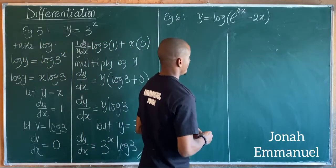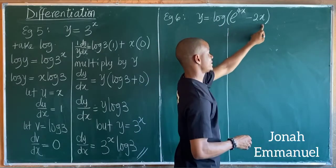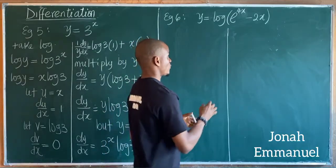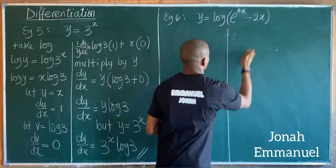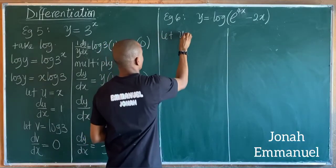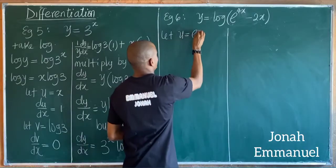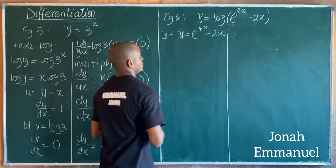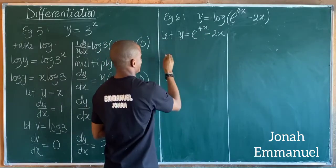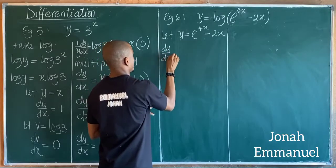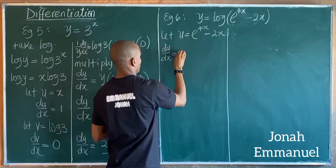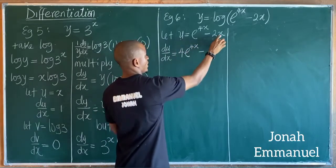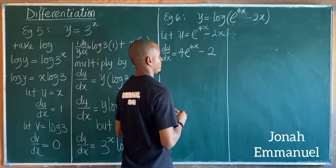Next example: we have y equal to log of (e^(4x) minus 2x). This involves a composite function, so we use the chain rule. Let u equal e^(4x) minus 2x. Differentiating u with respect to x gives du/dx equal to 4e^(4x) minus 2.